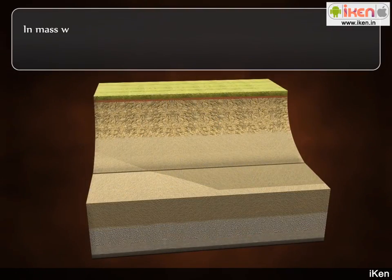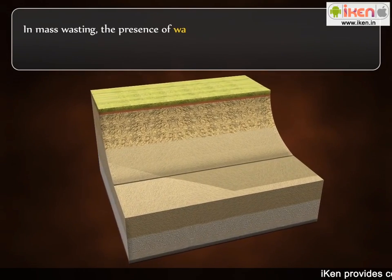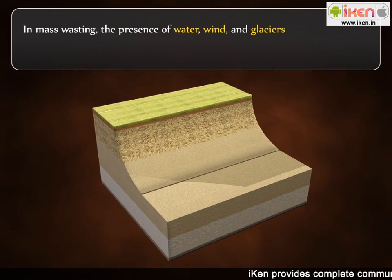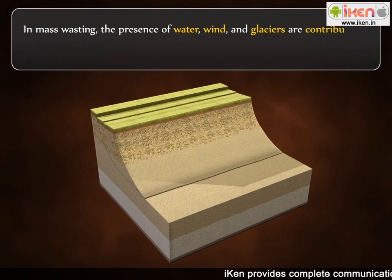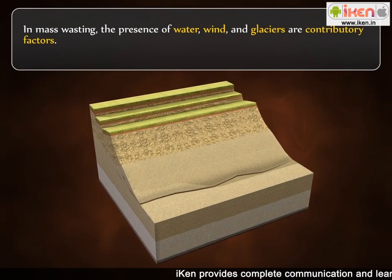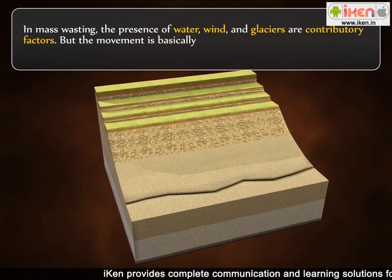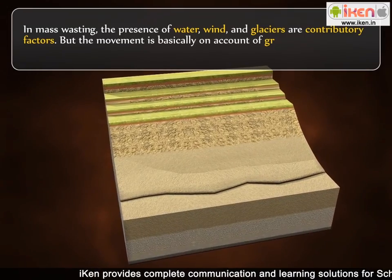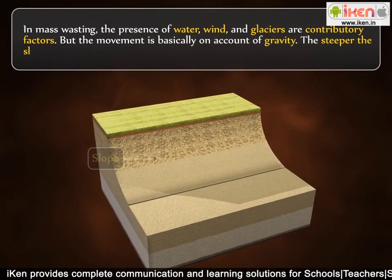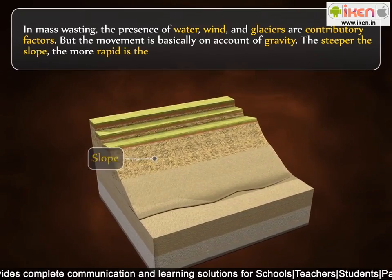In mass wasting, the presence of water, wind and glaciers are contributory factors. But the movement is basically on account of gravity. The steeper the slope, the more rapid is the movement.